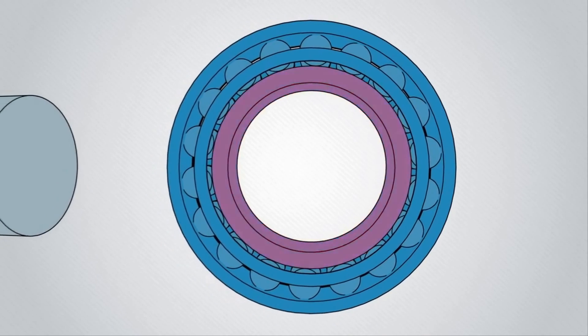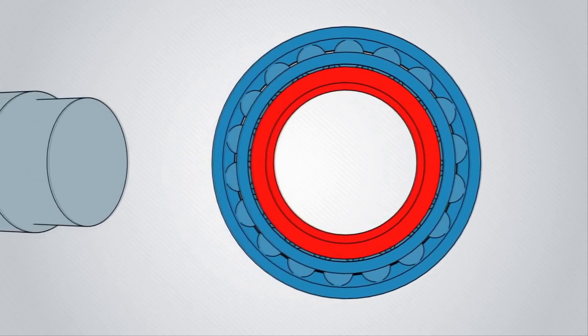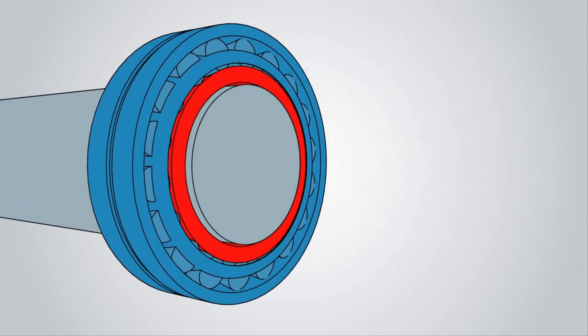This is why heat is used to expand the bearing inner ring before placing on the shaft. As the bearing cools, a stronger interference fit results.